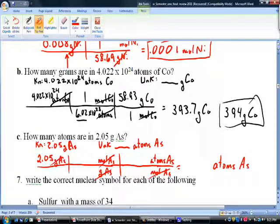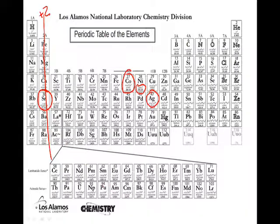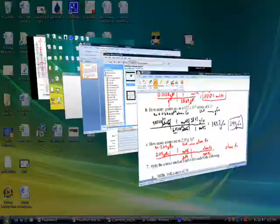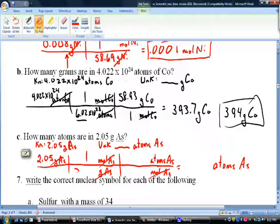How many atoms will it be? One mole of arsenic is - we're going to have to go to the periodic table. Here it is: 74.92 grams per one mole. And one mole is 6.02 times 10²³ atoms of arsenic.